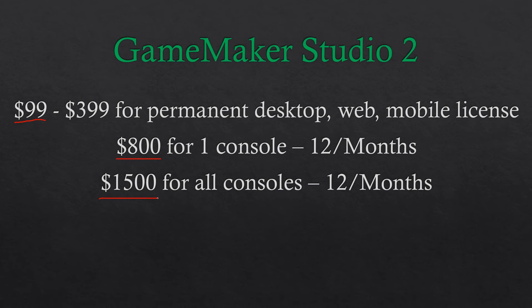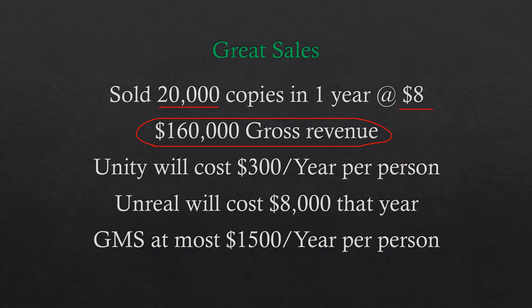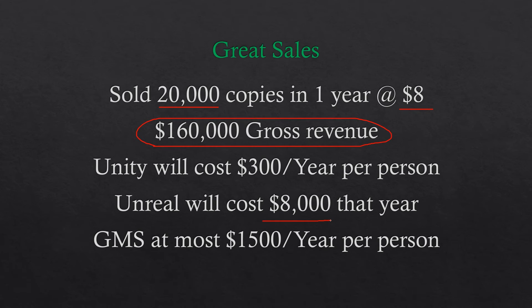Let's say your game did really quite well — 20,000 copies in your first year at $8 a copy. That's $160,000 in gross revenue. Unity would be $300 a year per person — not too bad. Unreal, on the other hand, is going to cost $8,000 for that year. And every year afterwards that your game is making more than $3,000, you'll keep paying Unreal that 5% royalty.